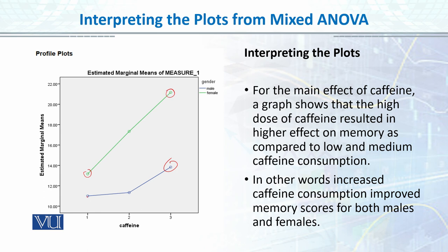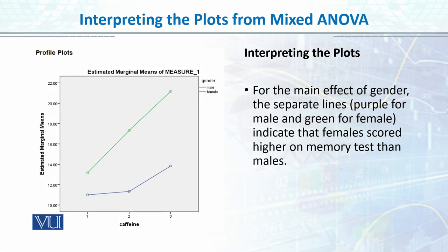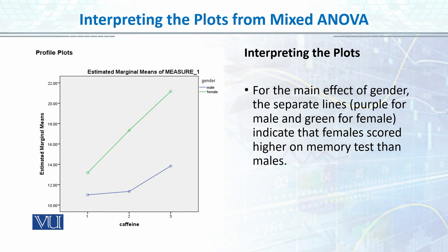For the main effect of gender, the separate lines — purple for male and green for female — indicate that females scored higher on the memory test than males. You can see that the green line for females is significantly scoring better on the memory task as compared to males. So the main effect for gender is of course significant.